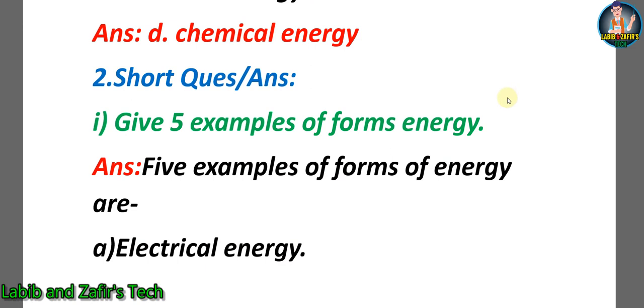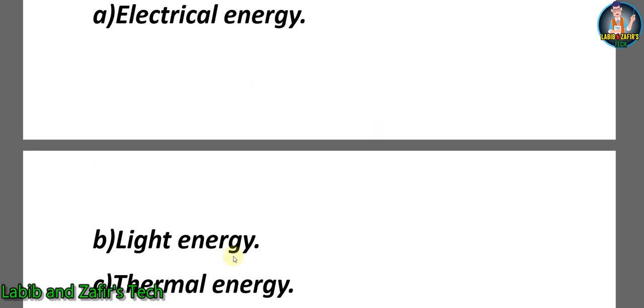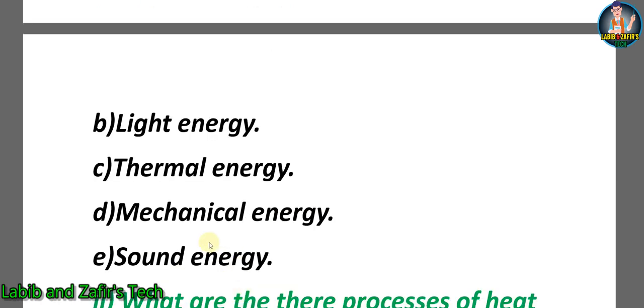Now students, let's go through some short question answers. Number one: give five examples of forms of energy. A) electrical energy, B) light energy, C) thermal energy, D) mechanical energy, and E) sound energy.